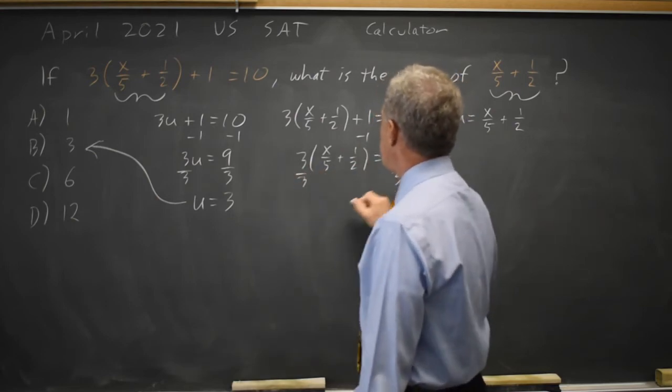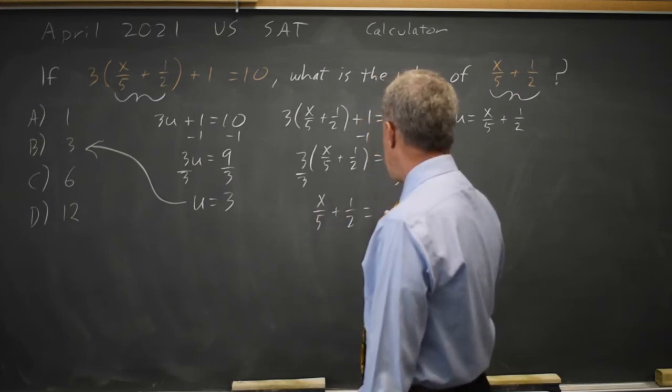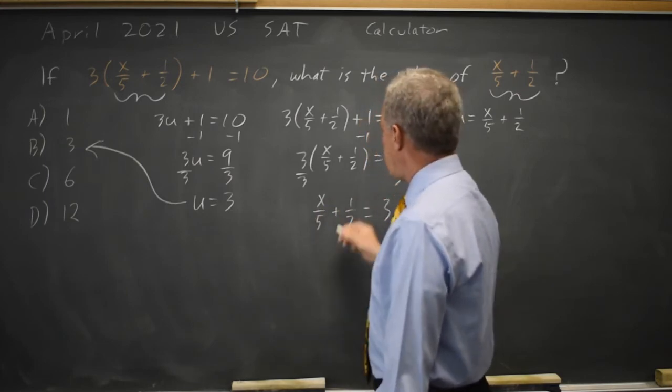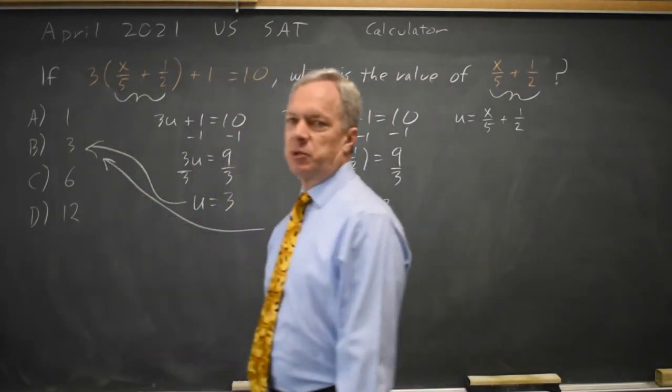Divide both sides by 3, and our expression equals 9 over 3, which is 3. And they're asking for the value of this expression. So again, that's choice B, 3.